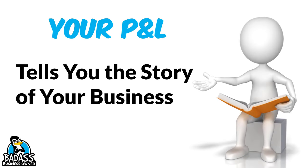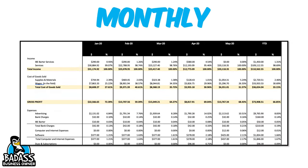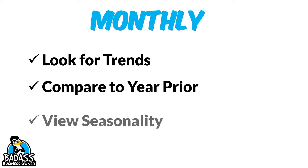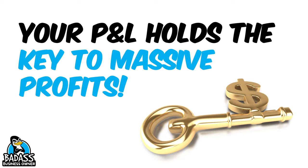Your P&L is basically telling you the story of your business. You don't just hand a book to a kid and tell them to read it — you teach them the alphabet, then how to spell a word, then how to put a sentence together. Your numbers are the same way. Once you understand the numbers and how they look on that piece of paper and what they're telling you, you can start seeing the story of your business. You can get your P&L by month, by year, compare this year to last year, month to month. It's going to tell you really cool stuff — you can look for trends, view seasonality, know when your best and lowest months are, and set aside profit accordingly. It really is the key to earning more profits.